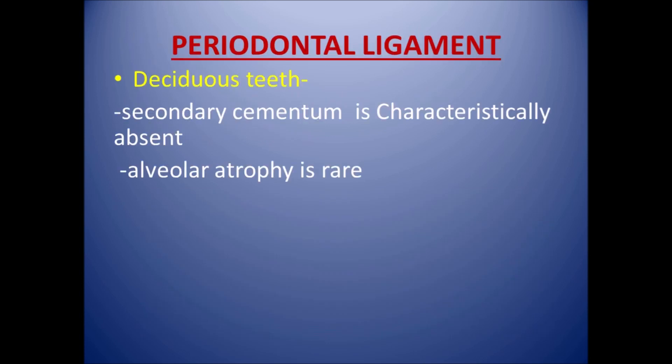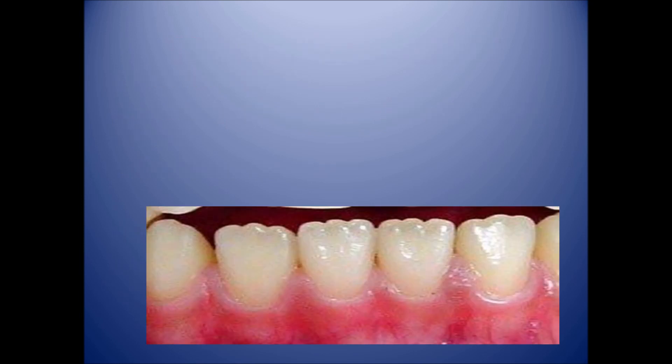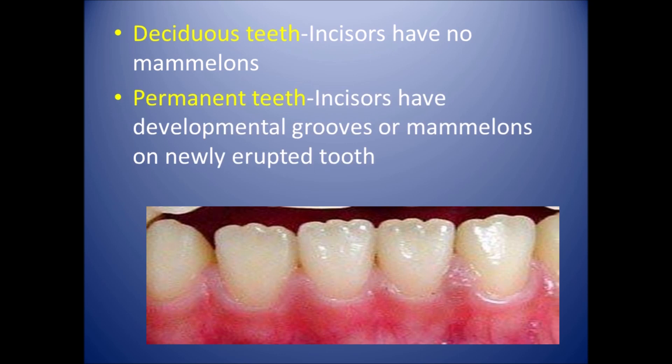Regarding the periodontal ligament, in deciduous teeth secondary cementum is characteristically absent, but in permanent teeth secondary cementum is present. In deciduous teeth, alveolar atrophy is rare, but in permanent teeth alveolar atrophy occurs. Permanent incisors have developmental grooves or mamelons on newly erupted teeth, which is absent in deciduous dentition.